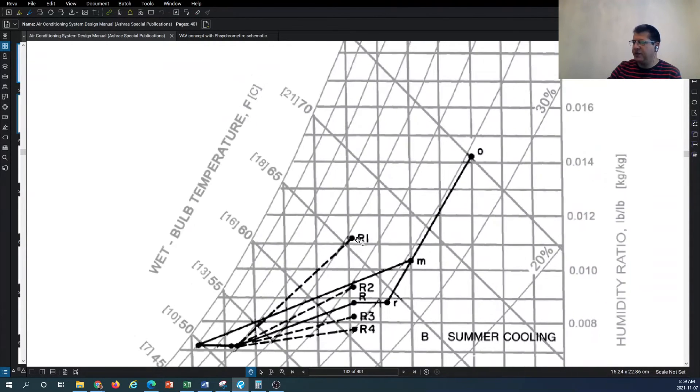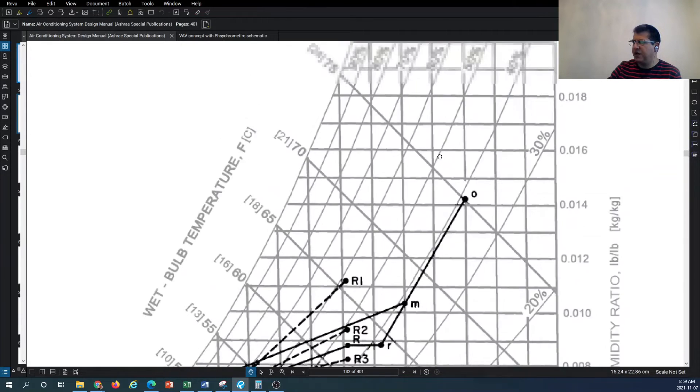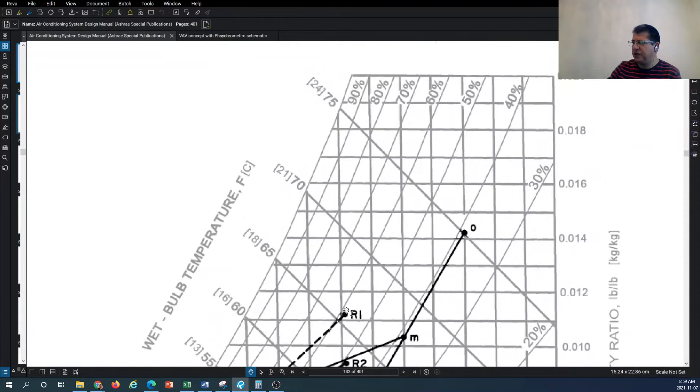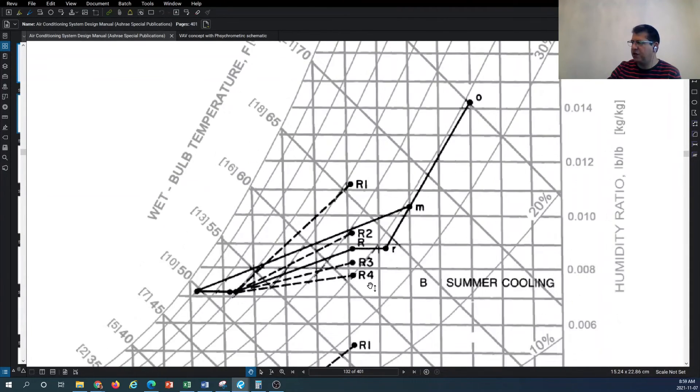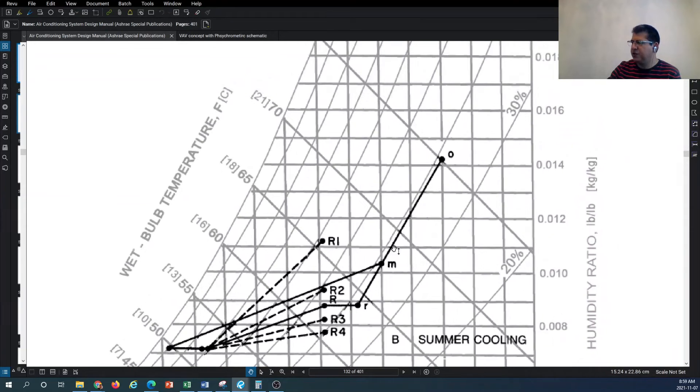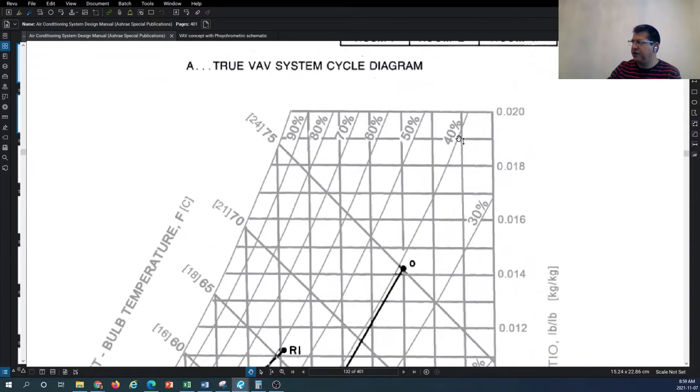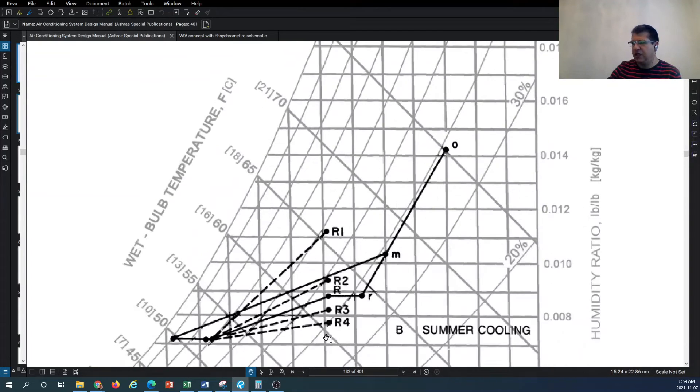As you can see, every one of these points—R1 all the way to R4—are staying within a different humidity ratio curve. Say for R1, very close to 60 percent relative humidity, where the R4 is very close to the curve for 40 percent relative humidity. So that's basically the range or the band of humidity, relative humidity difference, between these different four conditions.